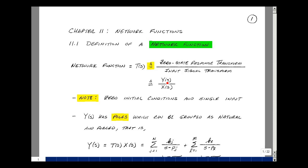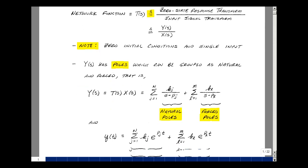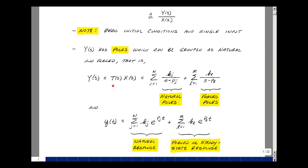We could also say that Y(s) is equal to T(s) times X(s). Now Y(s) can have poles in zero, so we can do a partial fraction expansion. Let's associate the poles with T(s). Say that there's n of those, so we'll go from j equals 1 to n, of some k sub j over s minus p sub j.